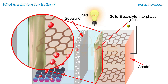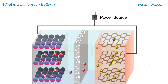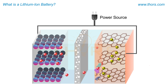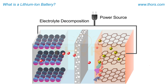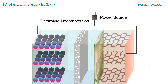The SEI layer is formed at the anode of lithium-ion batteries during the first few charging and discharging cycles by electrolyte decomposition. Once formed, the SEI layer helps to prevent further decomposition of the electrolyte.